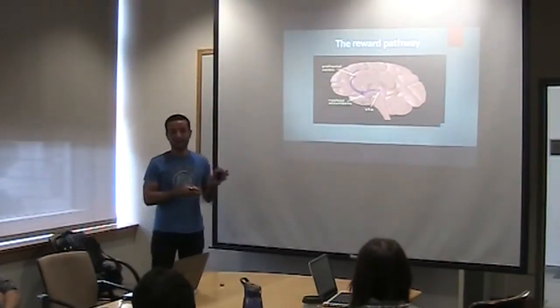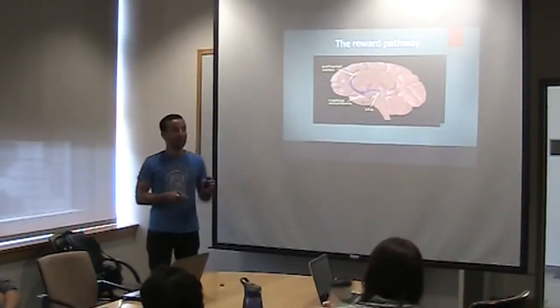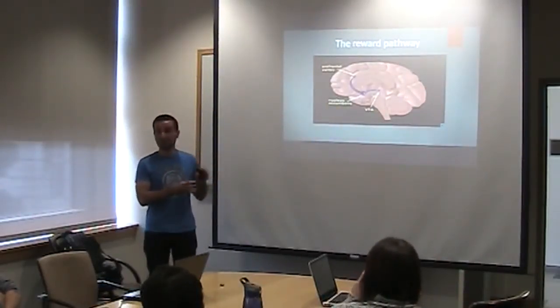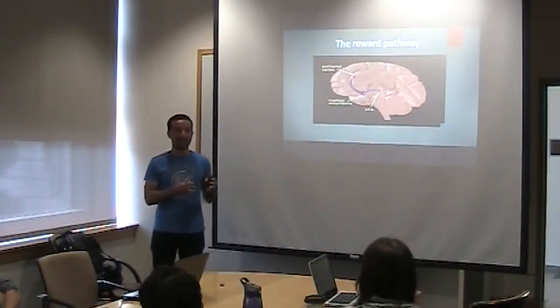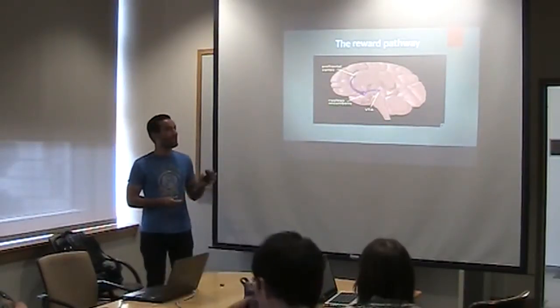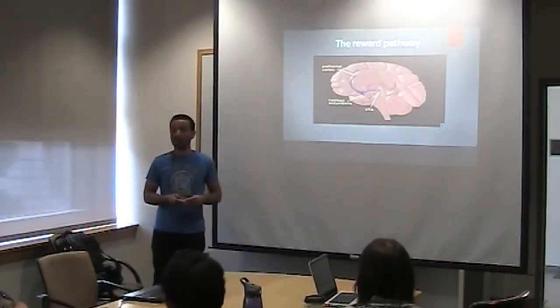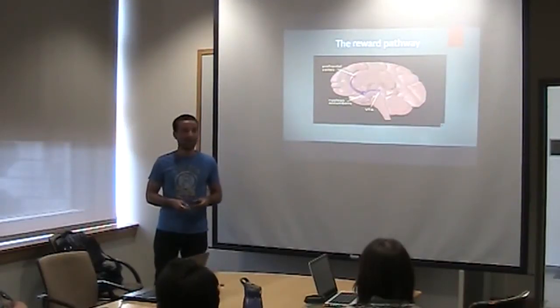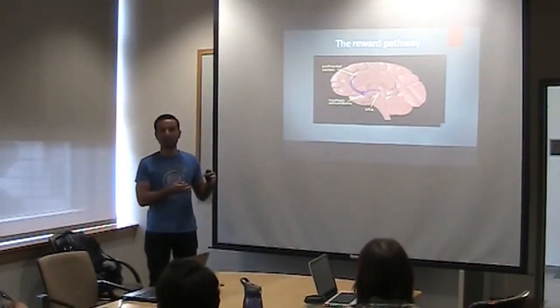Now there's something called the reward pathway. The reward pathway is basically a series of different parts of your brain that work together to give you that sense of pleasure when you do certain pleasurable things. For example, eating will activate your reward pathway. Drugs will also affect your reward pathway, and that's another reason why drugs make you feel good.